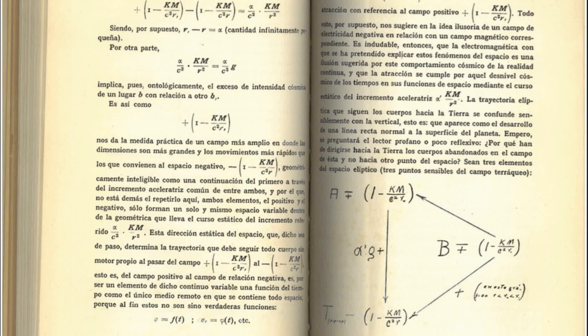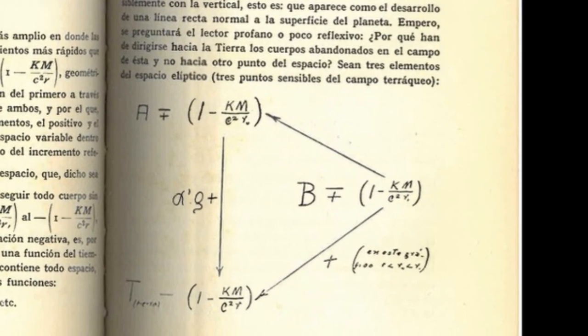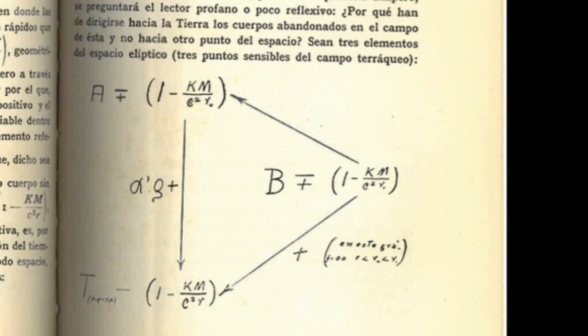There is no doubt, then, that the electromagnetic with which it has been alleged to explain these phenomena of space is an illusion by this cosmic behavior of continuous reality and that the abstraction is fulfilled by the cosmic unevenness of time and its function of space.